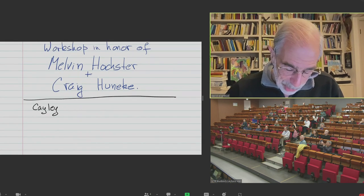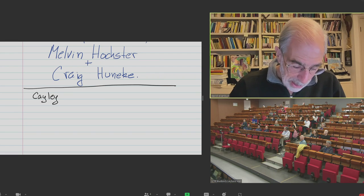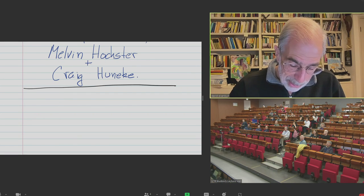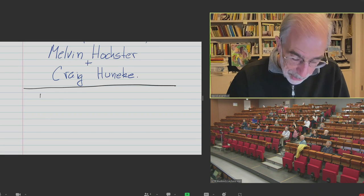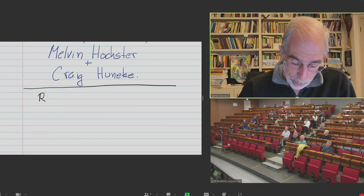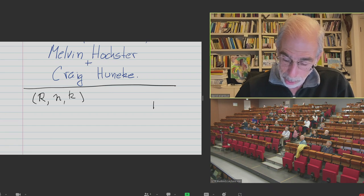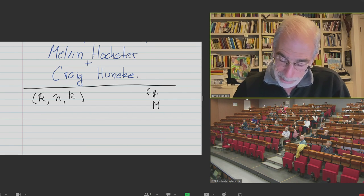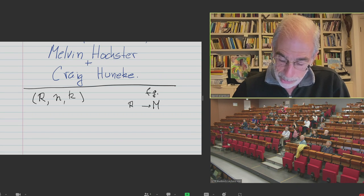I think probably everybody here knows what a resolution is. You have some module over some ring. I'll mostly work over local rings. Kaylee will come into the discussion, but doesn't need to be there yet. So, a resolution - you have some local ring R with maximal ideal N, residue field K.